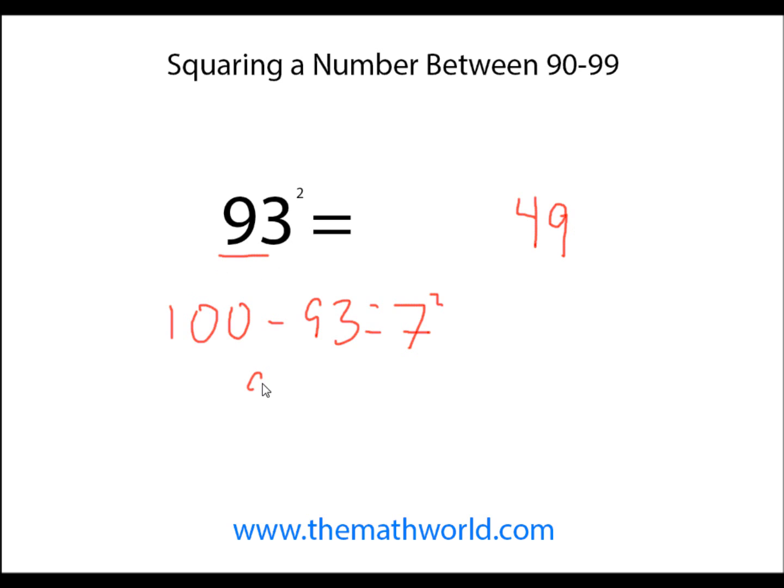Then you're going to take 93, and you're going to subtract 7. 93 minus 7 is 86, and so we're just going to write down 86. So 93 squared is 8,649.